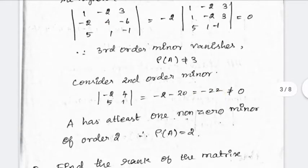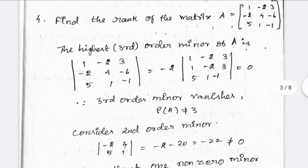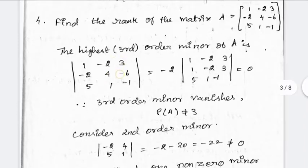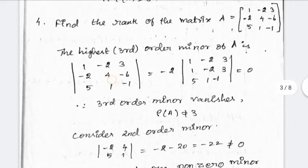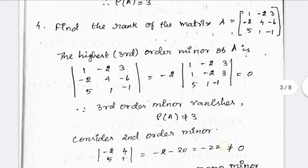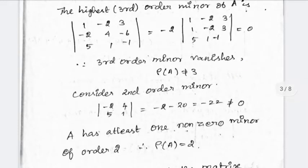I will get the rank of the matrix. If we choose a 2×2 submatrix, we check its determinant. In the first 4 elements, we have a determinant of zero. In the next 4 elements, we also have a determinant of zero. Now let's take these 4 elements — we have a non-zero value. So the second-order minor has a value, and rank of the matrix is 2.